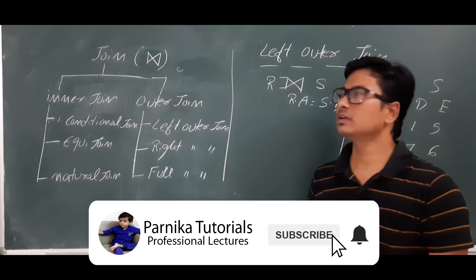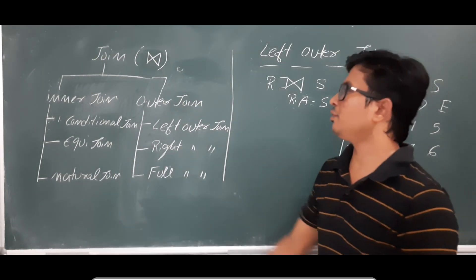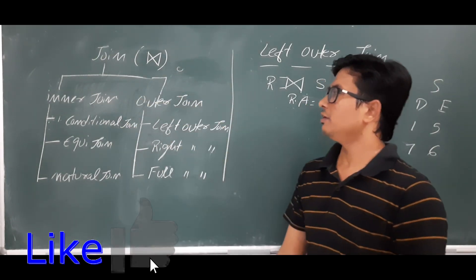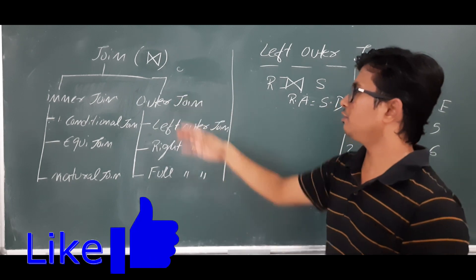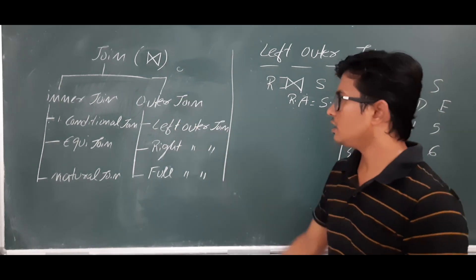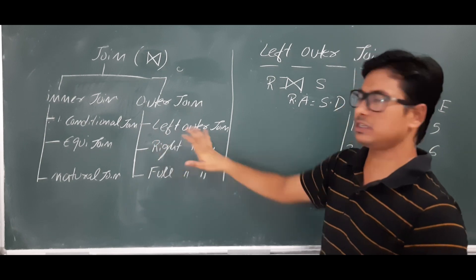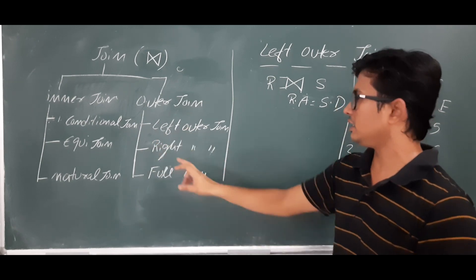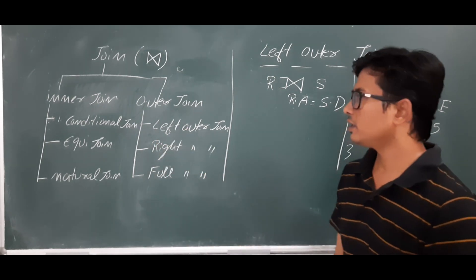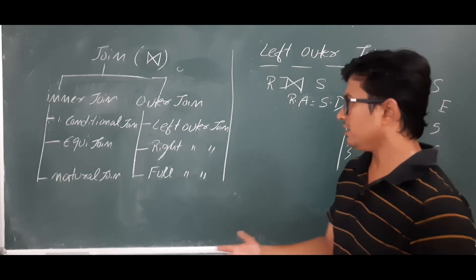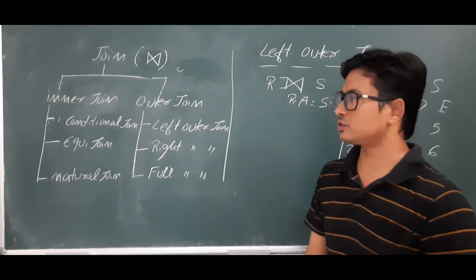Good morning friends. In the last video we discussed about inner joins. Now in this video we will discuss about outer joins. Outer joins are classified into three types: left outer join, right outer join, and full outer join. I will also explain the difference between inner join and outer join.